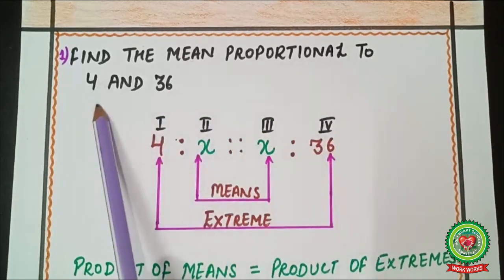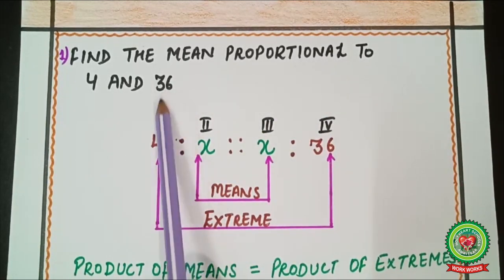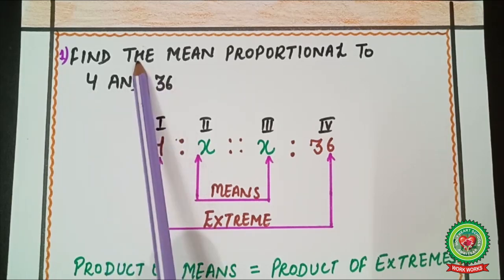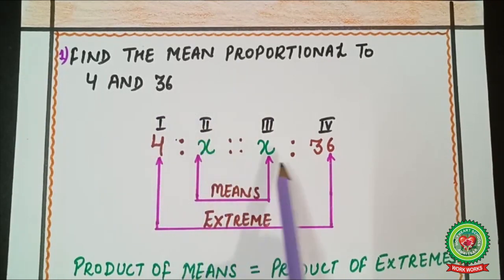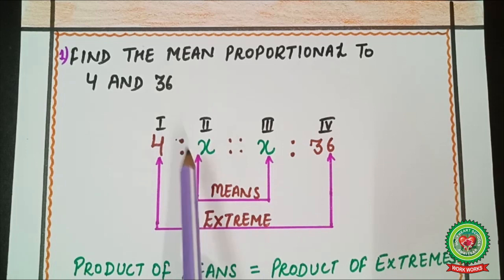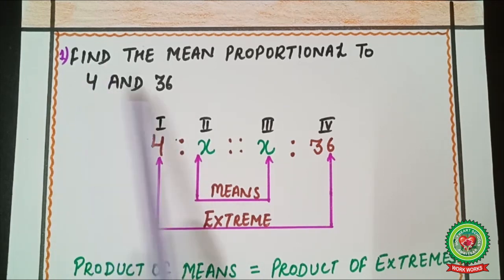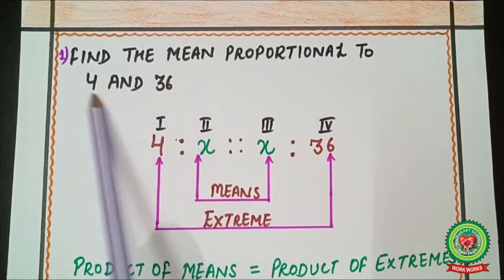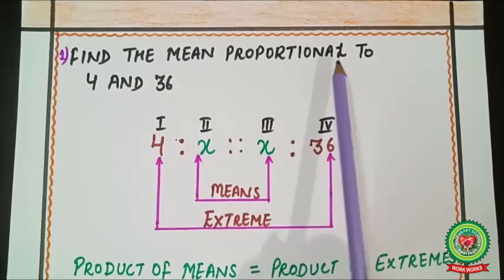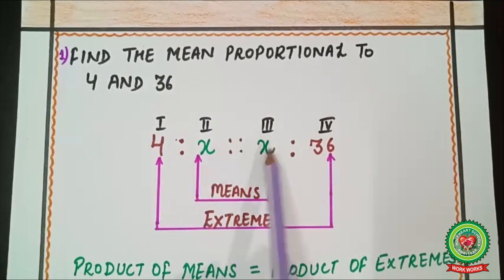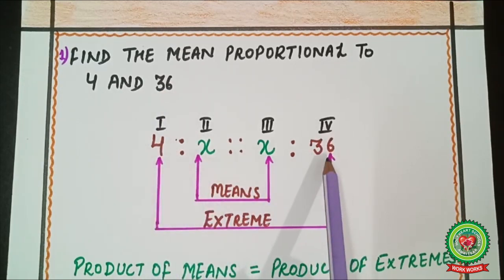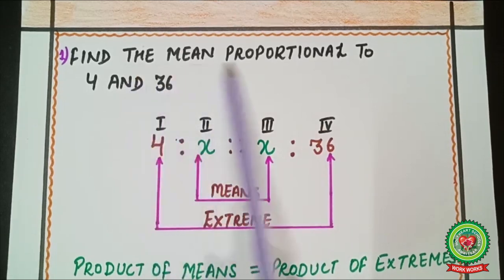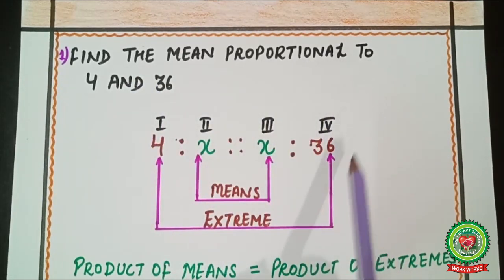Here we will start with the first example: find the mean proportional to 4 and 36. We are given only two numbers and have to find the mean proportional. We write them as 4 ratio x ratio x ratio 36, where 4 is the first and 36 is the last value, since those are the extreme values.